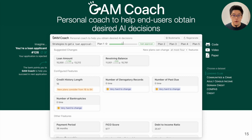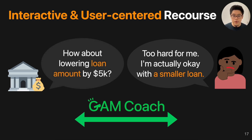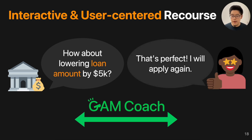To achieve that goal, we present GankCoach, the first of its kind interactive tool to help end users obtain different AI decisions and to customize those recourse plans. With GankCoach, we enable a new recourse paradigm where a user can provide their feedback and the bank or other agency can provide new recourse plans based on their preferences. For example, the applicant can tell the bank the recourse plan is too hard, and they're actually okay with a smaller loan amount. Then the bank will update the recourse plan and find an alternative using easier-to-change features — for example, lowering the loan amount by $5K — and the applicant will be happy with that plan and apply again.